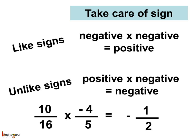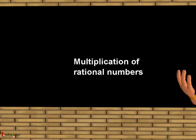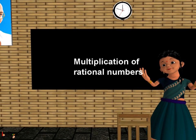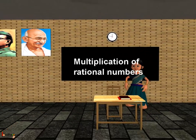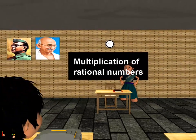So, now you know how to multiply given rational numbers. That's all for now. Bye-bye children.